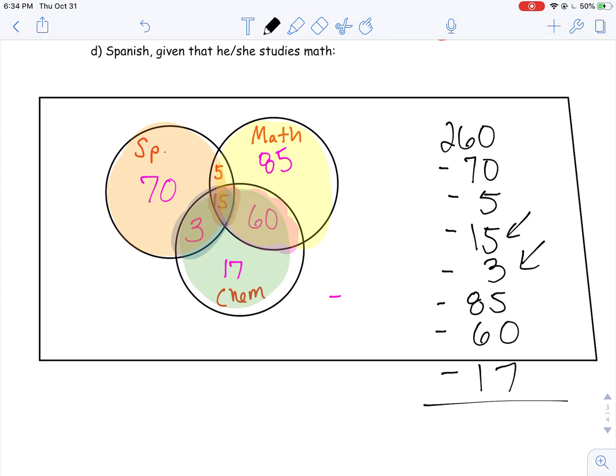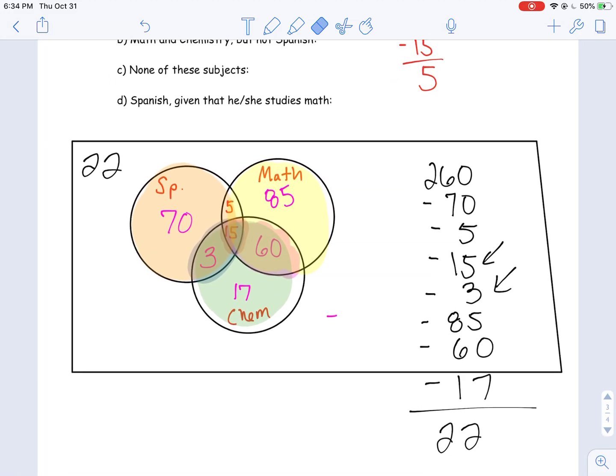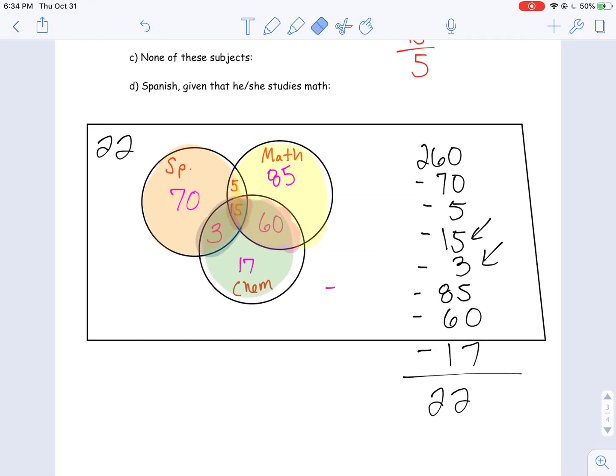So now I'm going to plug this in, 260 minus 70 minus 5 minus 15 minus 3 minus 85 minus 60, and I get 22. That doesn't mean I did something wrong here. That means that I have 22 students who did not take any of these three subjects. So I can represent them outside. I can put them right here. I'm just going to put them right there. And this represents, I'm going to put a title here, Class of 260 Seniors.